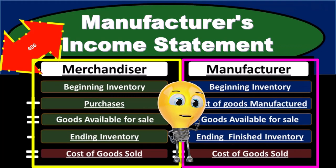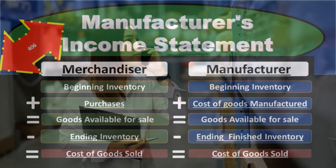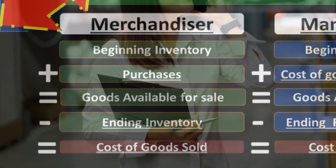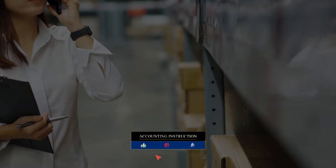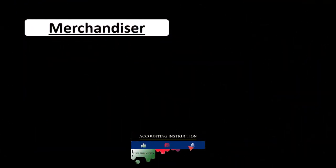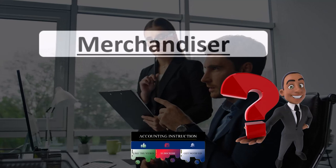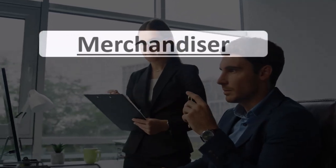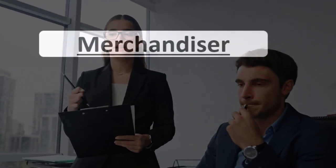A manufacturer — a company that makes the inventory — could differ from a service company that has no inventory, or a merchandiser who just purchases and sells inventory rather than making it. Part of that difference will be the calculation of the cost of goods sold. One of the key differences from a manufacturer to a service company will be related to inventory, and specifically the expense related to inventory at the point of sale: the cost of goods sold.